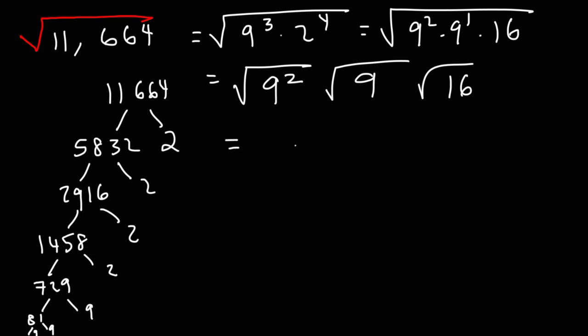So we have the square root of 9 squared times the square root of 9 times the square root of 16. The square root of 9 squared or the square root of 81 is just 9. The square root of 9 is 3. The square root of 16 is 4. So we have 3 times 4, which is 12. And then 9 times 12. 9 times 10 is 90. 9 times 2 is 18. 90 plus 18 is 108. So the square root of 11,664 is 108. So that's one method that you could use to find the square root of a large number.